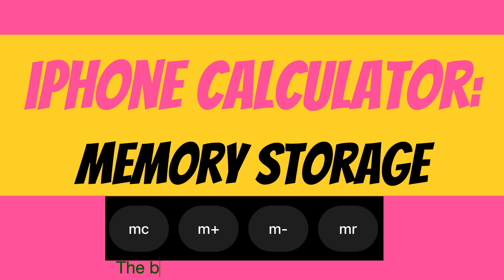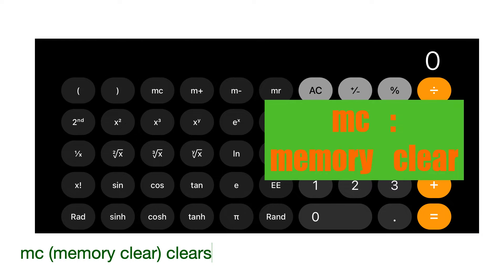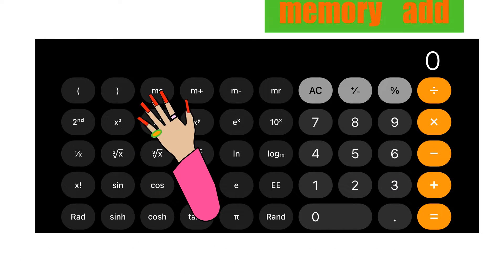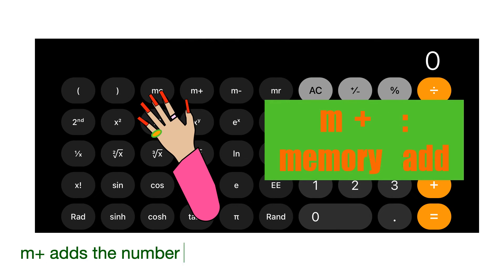The buttons for memory functions. MC, memory clear, clears any numbers you have in memory. M plus adds the number on the display to the number in memory.